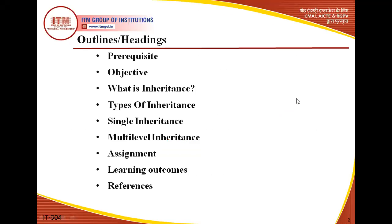First of all, let us discuss the outlines or headings. Initially, prerequisite, then objectives. At third position, we will revise two topics: what is inheritance and types of inheritance. Then we will discuss single inheritance and multi-level inheritance, along with their implementation in the compiler. At the last section, we will cover assignment, learning outcomes, and finally references.